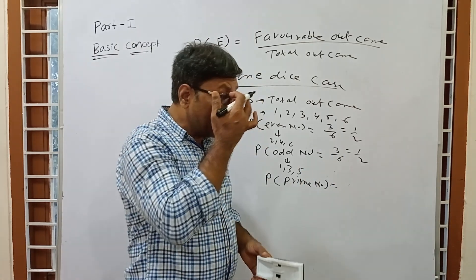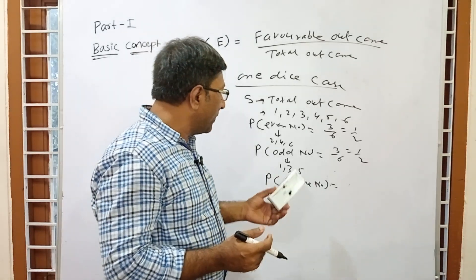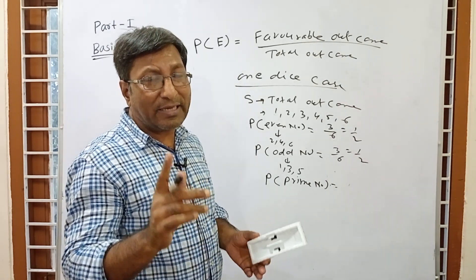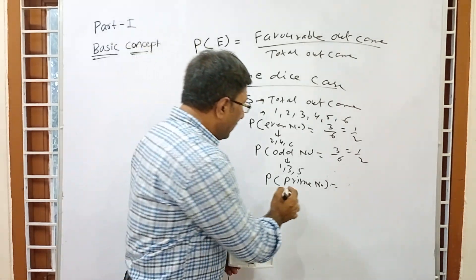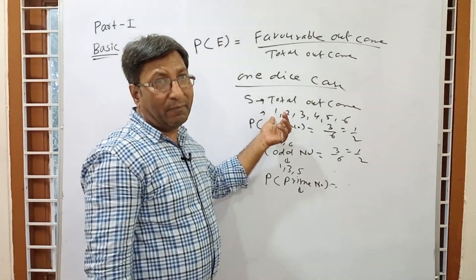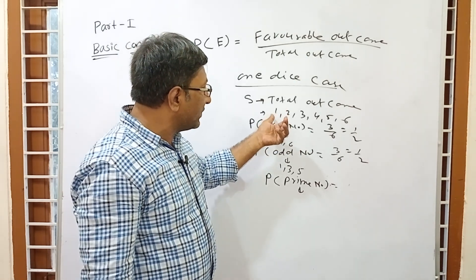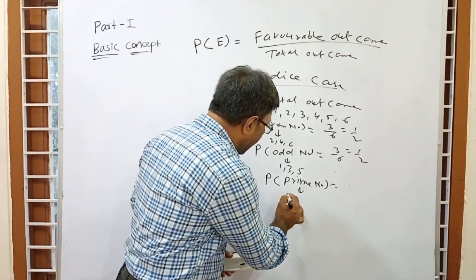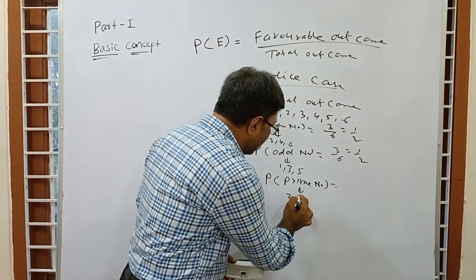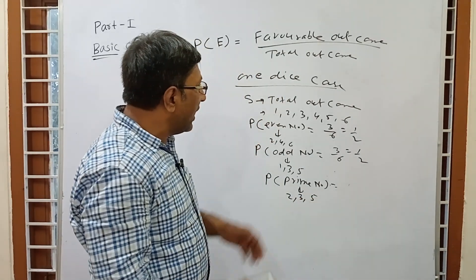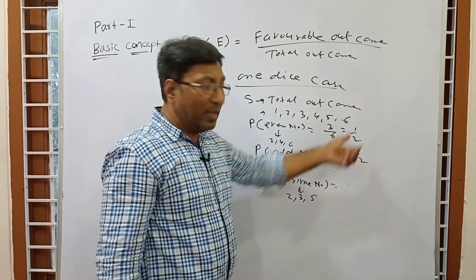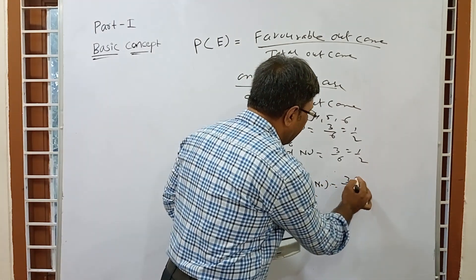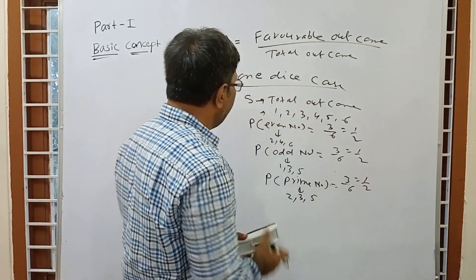The most important part: probability of a prime number. Many students get confused about prime numbers. A prime number is a number not divisible by any other number except 1 and itself. Note: 1 is not a prime number. From our outcomes {1, 2, 3, 4, 5, 6}, the prime numbers are 2, 3, and 5 — so 3 favorable outcomes. Answer: 3/6 = 1/2.